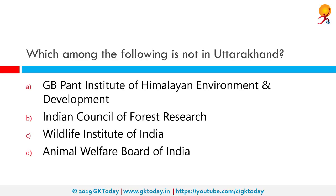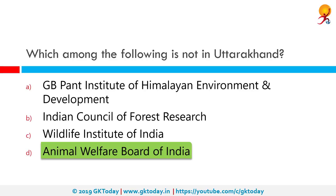Which among the following is not in Uttarakhand? The correct answer is the Animal Welfare Board of India, which is in Ballabhgarh in Haryana. All the others — GB Pant Institute of Himalayan Environment and Development, Indian Council of Forest Research, and Wildlife Institute of India — are all in Uttarakhand.